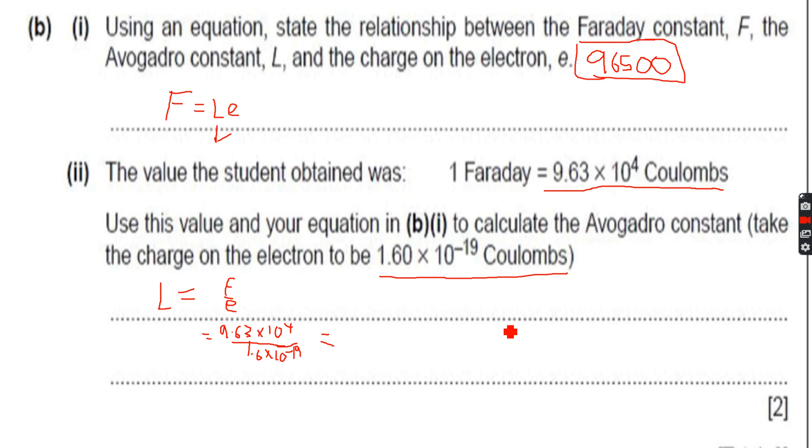So we get, to three significant figures, 6.02 times 10 to the power of 23. We know that the Avogadro constant is exactly this value, so we will be good to go because our answer is correct. This is the actual value of the Avogadro constant.